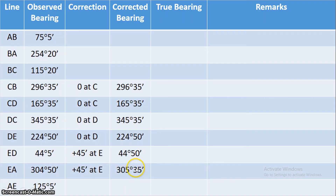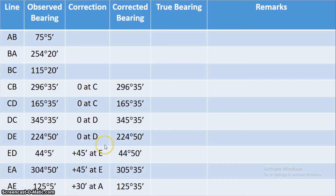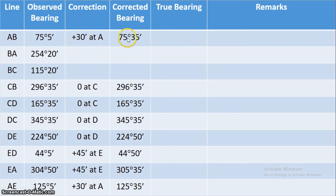The backbearing of EA is AE. Since 305 degrees 35 minutes is greater than 180 degrees, we subtract 180 degrees to get 125 degrees 35 minutes. The observed value for AE was 125 degrees 5 minutes. Corrected minus observed: 125 degrees 35 minutes minus 125 degrees 5 minutes equals positive 30 minutes correction at station A.